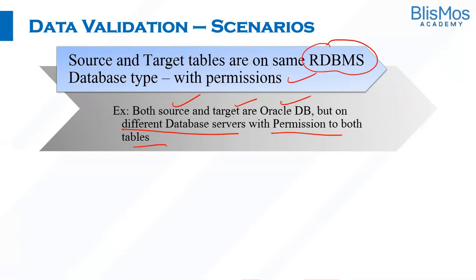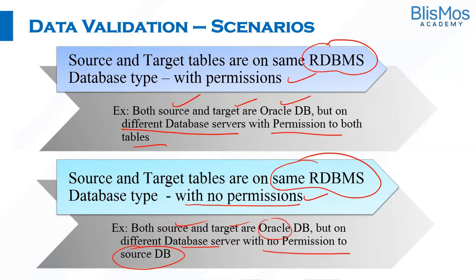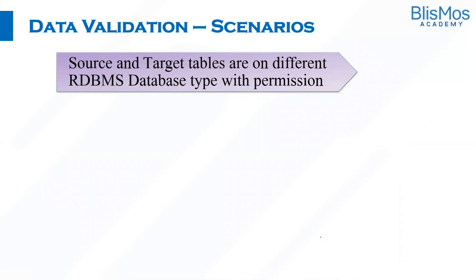The next scenario is where source and target tables are on the same RDBMS but the testing team does not have permissions to the source. For example, source and target are in Oracle DB on different database servers, with no permission to the source DB — the testing team has access to the target DB but not to the source DB.